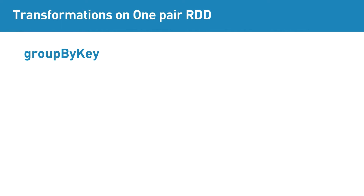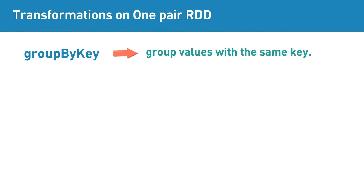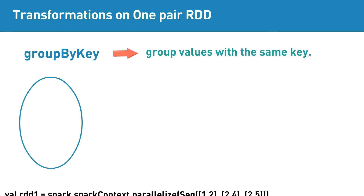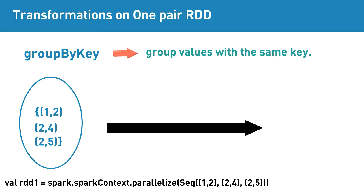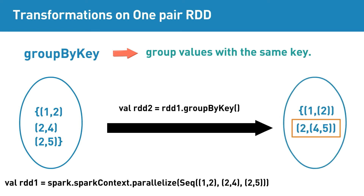groupByKey is a pair RDD transformation that groups values with the same key. This transformation doesn't take any function. For example, if the input RDD contains elements (1,2), (2,4), (2,5), then groupByKey transformation will return the grouped result as the resultant RDD, where values belonging to the same key are grouped together.